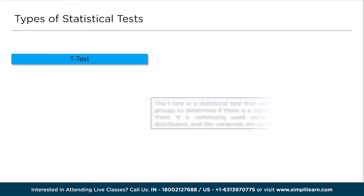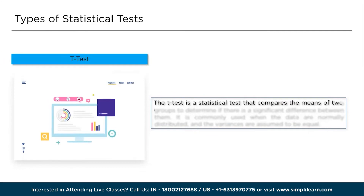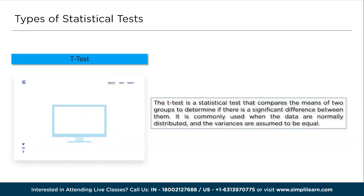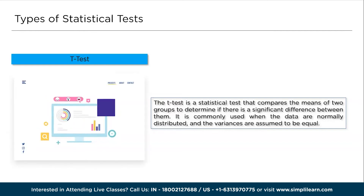The T-test is a statistical test that compares the means of two groups to determine if there is a significant difference between them. It is commonly used when the data are normally distributed and the variances are assumed to be equal. The T-test considers the sample sizes, means, and variances of the groups being compared.